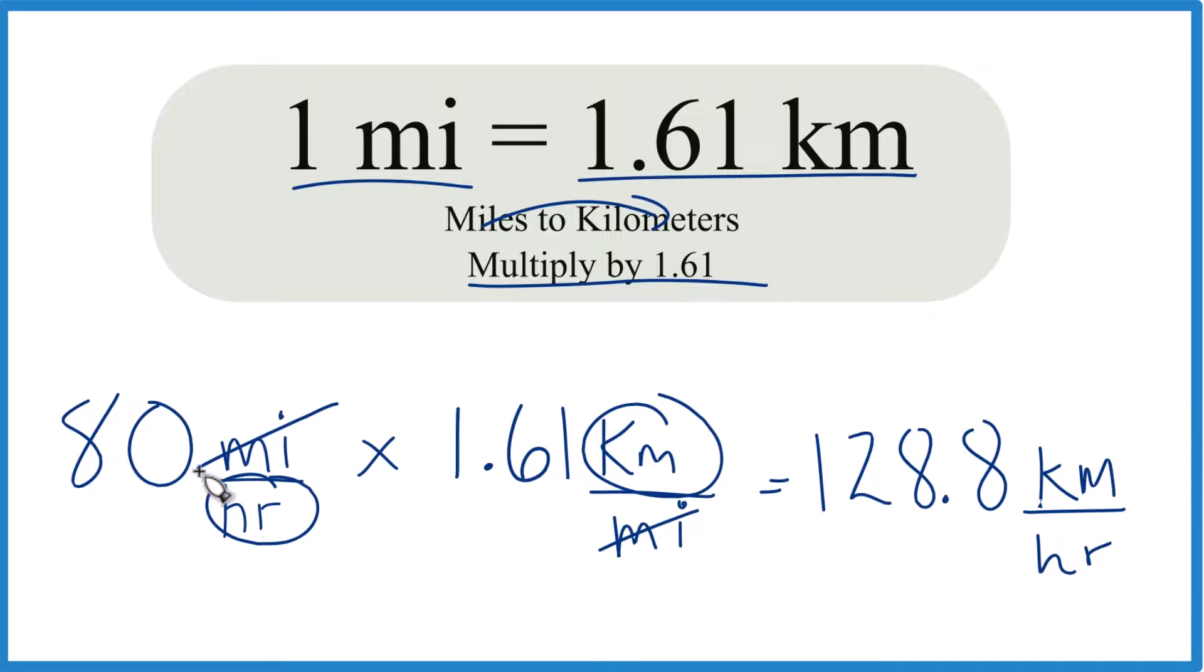So that's it. That's how you convert 80 miles per hour, 80 MPH, to kilometers per hour. The answer, 128.8 kilometers per hour.